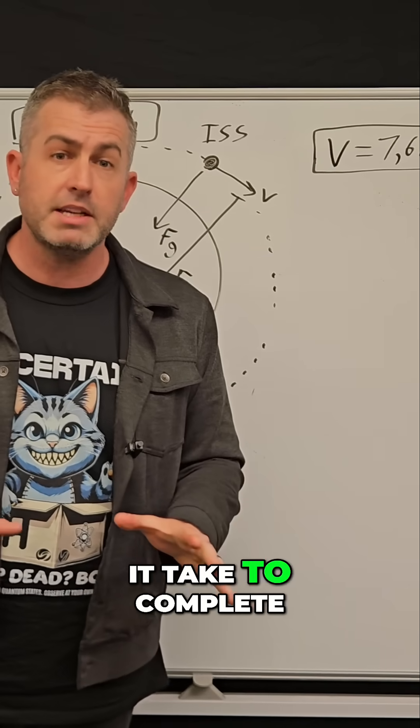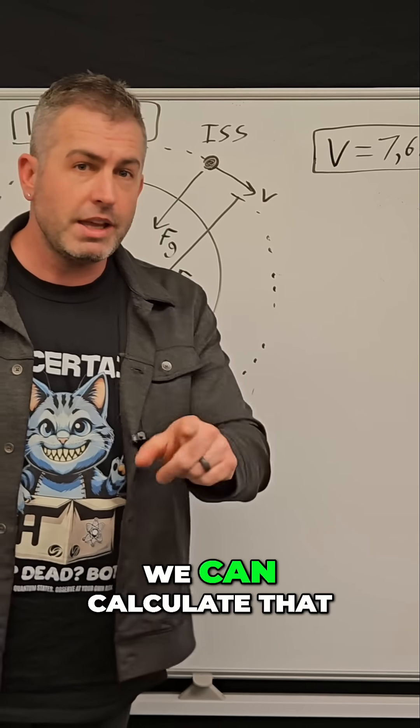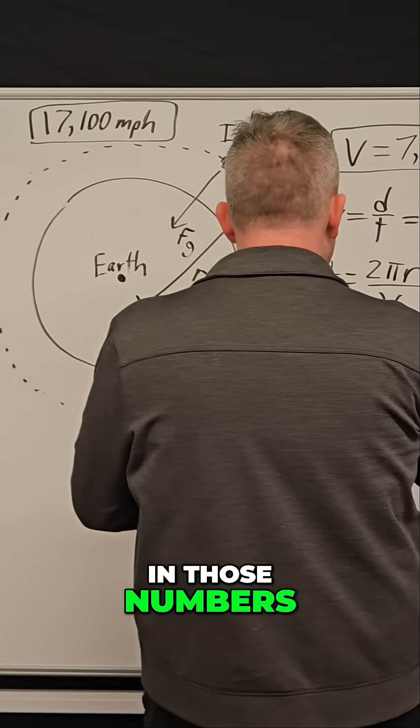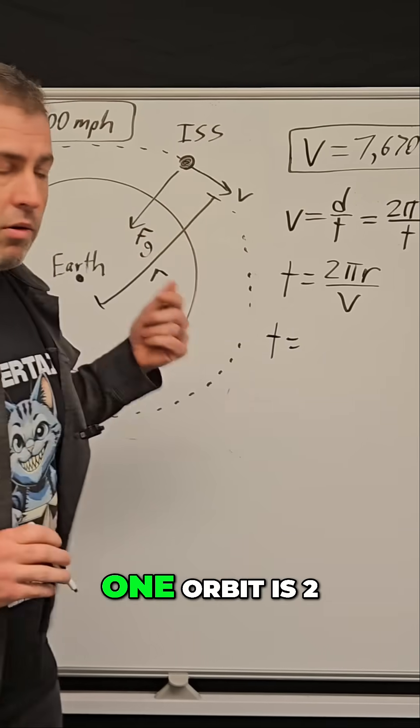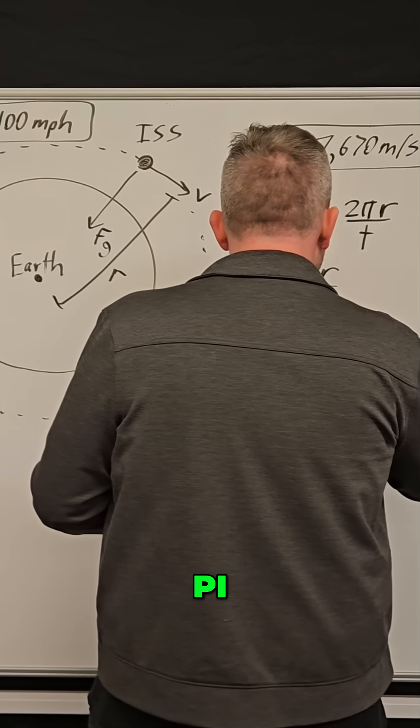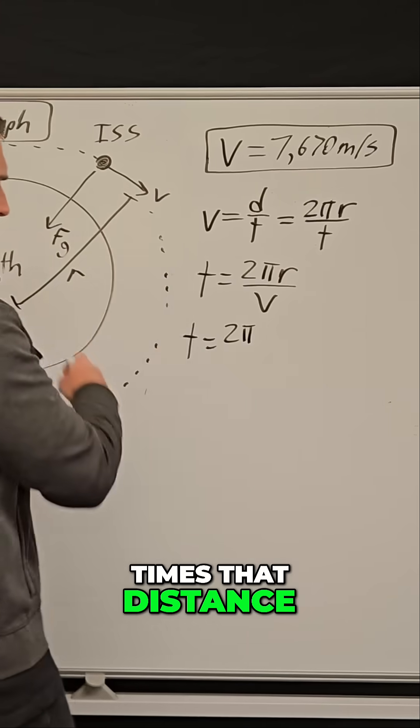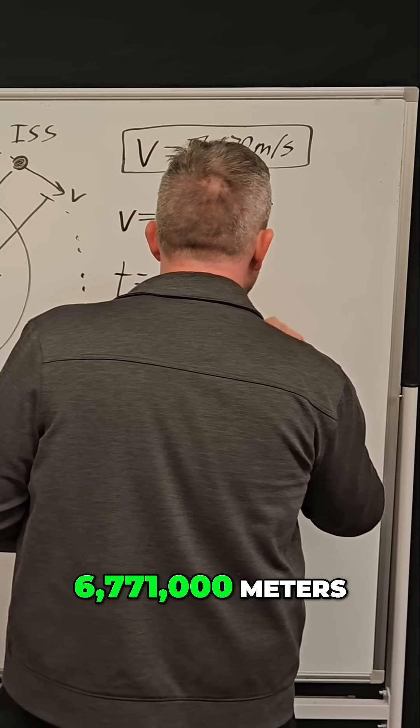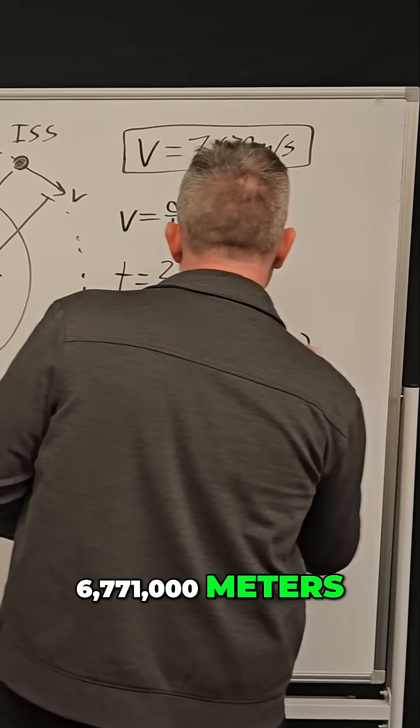How much time does it take to complete a single orbit? We can calculate that too. Here's the deal. If I plugged in those numbers, the time to complete one orbit is 2π times that distance, which I believe is 6,771,000 meters, divided by